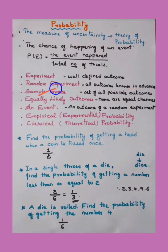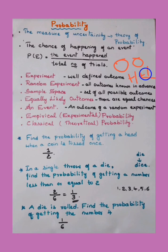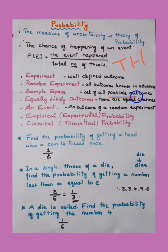Sample space is the set of all possible outcomes. If you have two coins and toss them simultaneously, the possible outcomes are: both heads, both tails, one head and one tail, or one tail and one head. These form the sample space — the set of all possible outcomes.